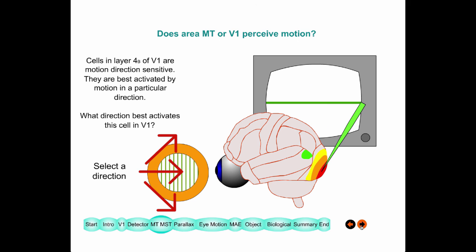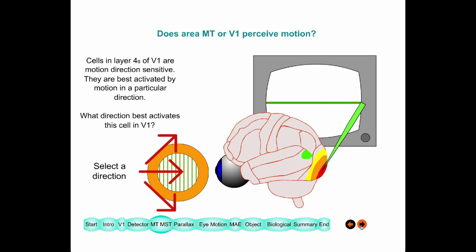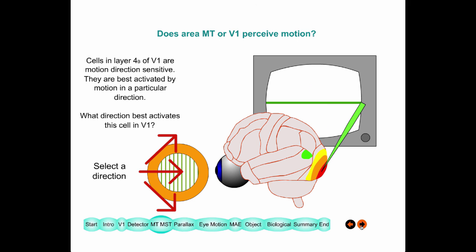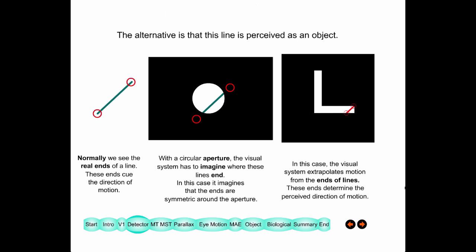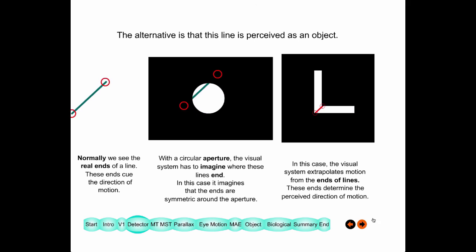About 10 to 15 years ago, experiments with monkeys demonstrated that MT is the region that actually senses the perceived direction of motion. What you perceive may not be reality, but what you perceive is what MT senses — your sense of perception is congruent with what MT is signaling.